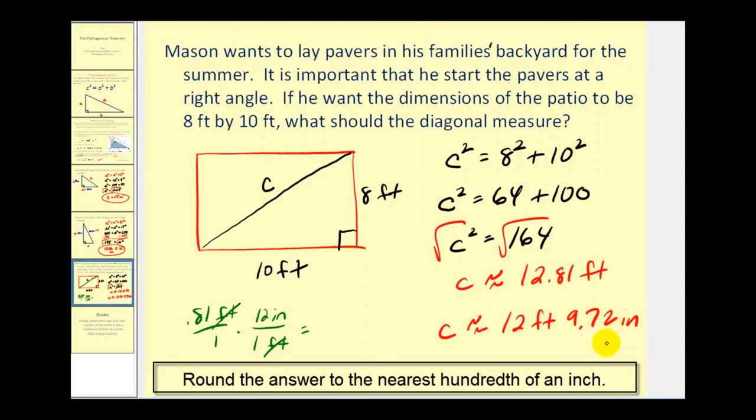So Mason can get a very good indication what this length has to be with a tape measure if he wants this to be a right angle. I hope you found this video helpful. Thank you for watching.